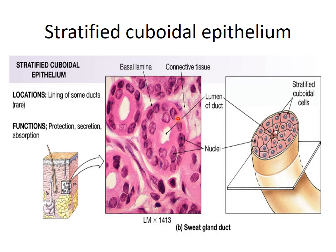The stratified cuboidal epithelium consists of two or more layers, named according to its cuboidal surface layer. It lines the ducts of the sweat glands. Its main functions are protection, secretion, and absorption. The basal layer is cuboidal and it consists of two layers, with the surface layer also being cuboidal epithelium, as seen in the duct of the sweat gland.